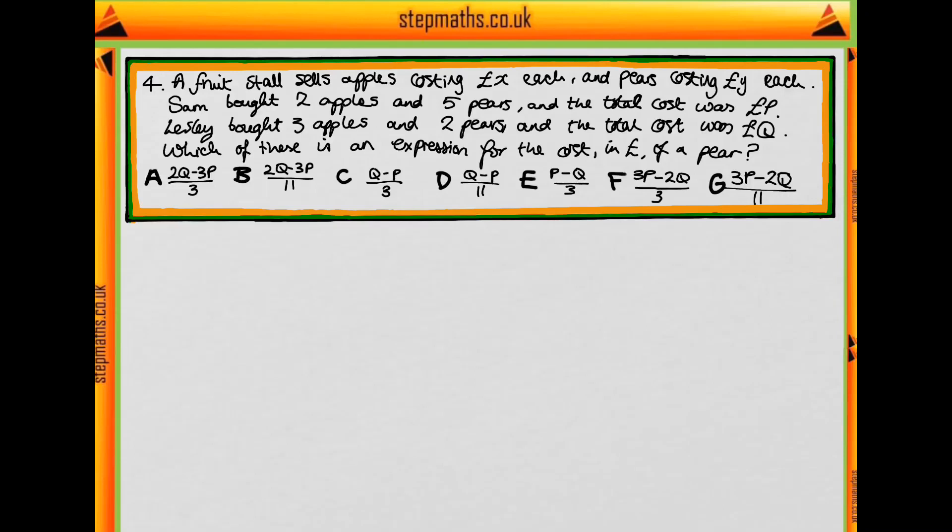This is question four of section one of Natural Sciences Admissions Assessment Past Paper 2017 and it's a question about simultaneous equations.